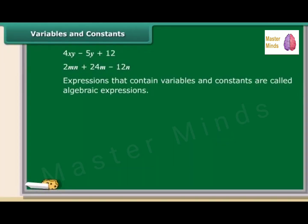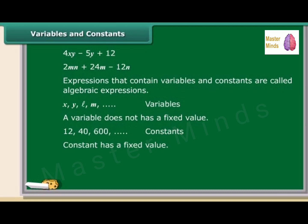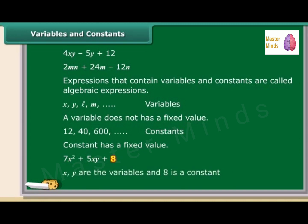Expressions that contain variables and constants are called algebraic expressions. Letters such as X, Y, L, M and so on are used to denote variables. A variable can take various values and its value is not fixed. On the other hand, a value that does not change is a constant. So in the equation 7X² + 5XY + 8, X and Y are the variables and 8 is a constant.